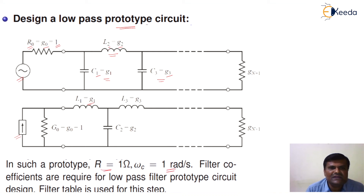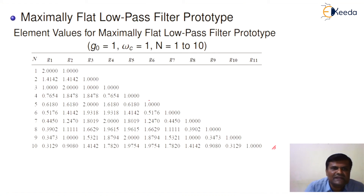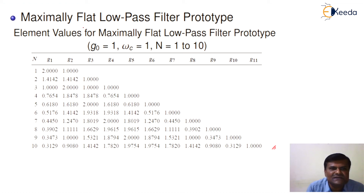For the source resistance, we set R0 equal to 1 ohm and omega_c, the cutoff frequency, equal to 1 radian per second. These are called normalized component values. The remaining components G0, G1, G2, and G3 are calculated with the help of a provided table. There are two types of filters generally used: one is a maximally flat low-pass filter, and the second is an equally ripple low-pass filter. We will first see the maximally flat low-pass filter.